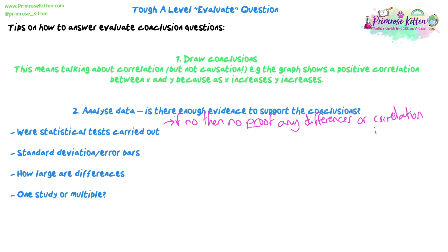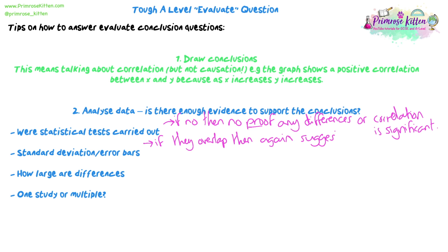No statistical test was carried out, so we can't be sure the data supports this conclusion because the differences or the correlation might not be significant. If they haven't done a stats test, maybe they've got standard deviation or error bars on the graph. If the error bars are not overlapping, there's a chance there's no significant difference. You can use both of those as either a for or against, depending on whether they're present or absent.